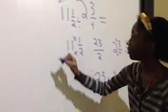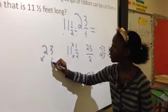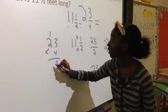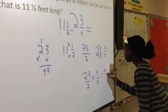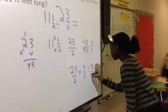So then you do 23 times 4. 12, 8, 92. So then 92. You need to do 2 times 11, which is 22.